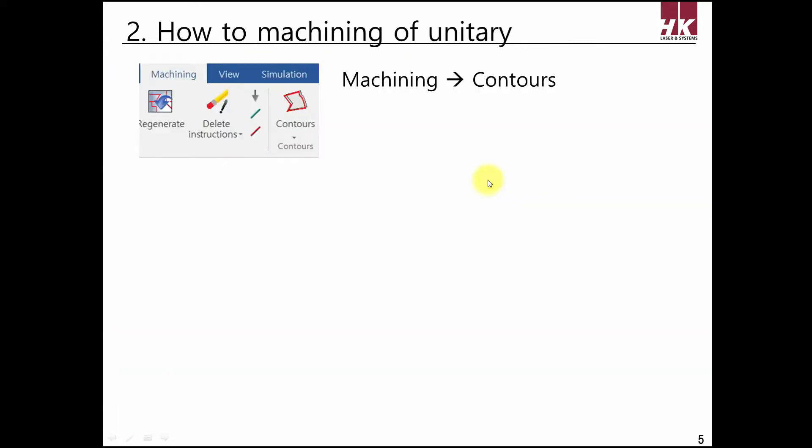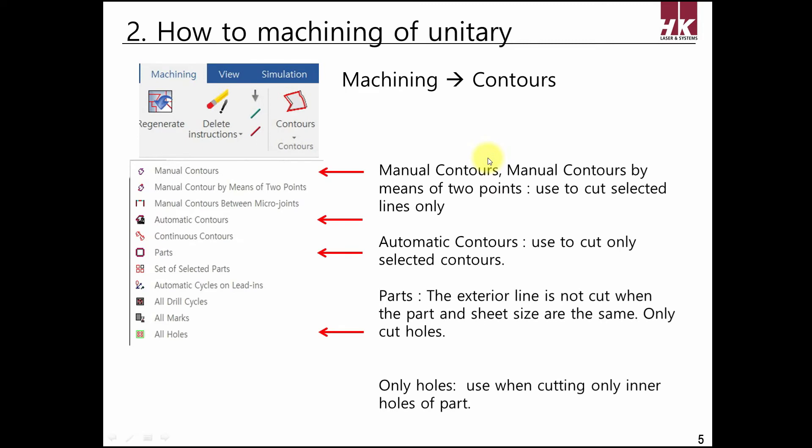Now let's learn how to make machining. In Contour on Machining tab, there are various machining methods. For unitary nesting, you can use some machining methods including Manual Contours, Automatic Contours, and Part.